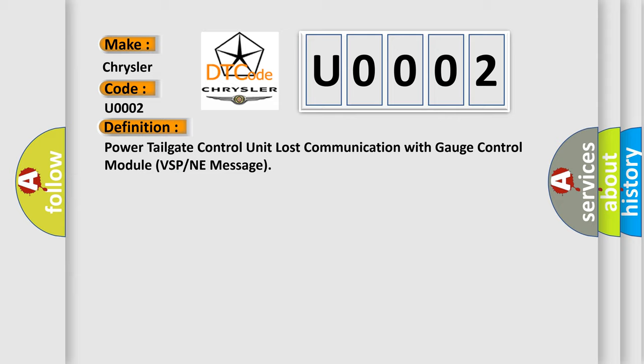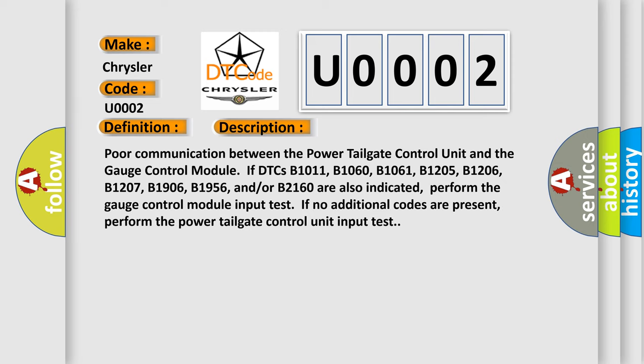Here is a short description of this DTC code. Poor communication between the power tailgate control unit and the gauge control module. If DTCs B1011, B1060, B1061, B1205, B1206, B1207, B1906, B1956, and/or B2160 are also indicated, perform the gauge control module input test. If no additional codes are present, perform the power tailgate control unit input test.